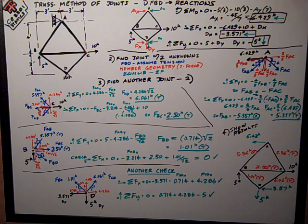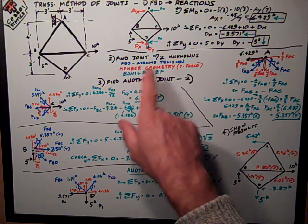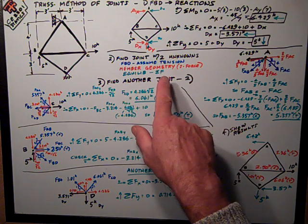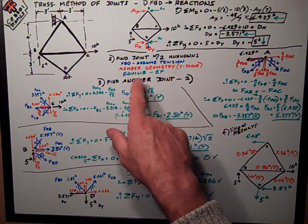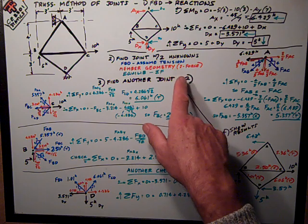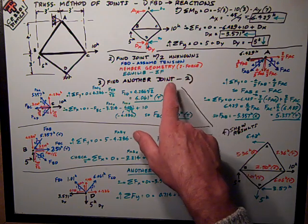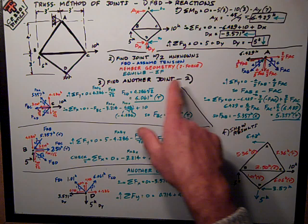Step 2 was to find a joint with two unknowns. Draw a free body diagram. Assume member geometry. Assume tension for every member. Member geometry, remember, because it's two force members in a truss. Gives me the components of the forces.